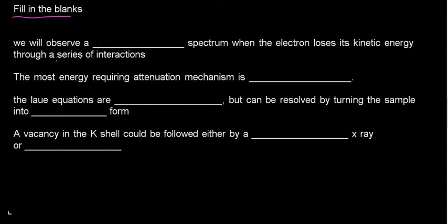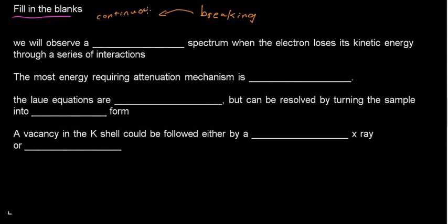Fill-in-the-blank: 'We will observe a ___ spectrum when the electron loses its kinetic energy through a series of interactions.' When we're talking about a series of interactions, it's Bremsstrahlung radiation. Bremsstrahlung means continuous — so this would be a continuous spectrum. Reading it again: 'We will observe a continuous spectrum when the electron loses its kinetic energy through a series of interactions.' In an exam I just write 'Bremsstrahlung' to make it easier.